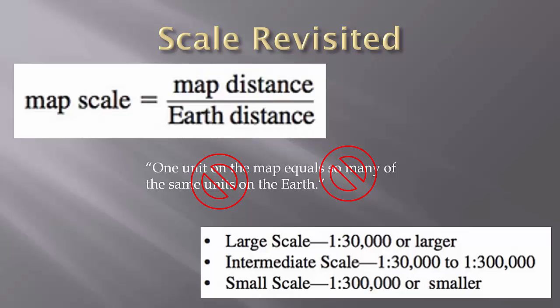RF scales are meant to be read: one unit on the map represents so many of the same units on the earth. The number in the fraction may be in any units, but both numerator and denominator will be in the same units. It is important to note that cartographers or GISers should never say 1 unit on the map equals so many of the same units on earth. This is incorrect and logically inconsistent.